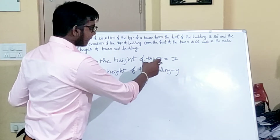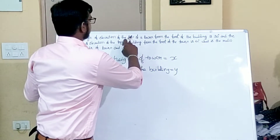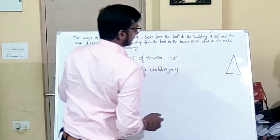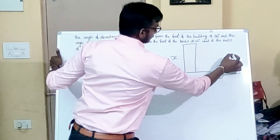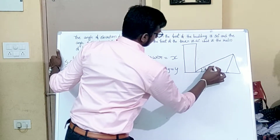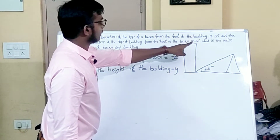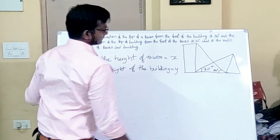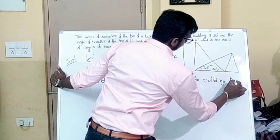Let the height of the tower equal x and the height of the building equal y. Reading the question again: the angle of elevation of the top of the tower from the foot of the building is 30 degrees — let this be the tower and this be the building. The angle of elevation of the top of the building from the foot of the tower is 60 degrees. We also assume the distance between them to be z.